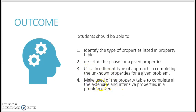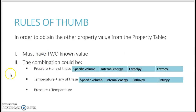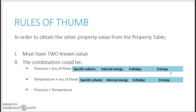Finally, you are going to be able to make use of the property table to complete all the extensive and intensive properties in a given problem. The rules of thumb in reading your property table: the first one, you must have two known values. The combination of the two known values could be pressure with any of specific volume, internal energy, enthalpy, and entropy.